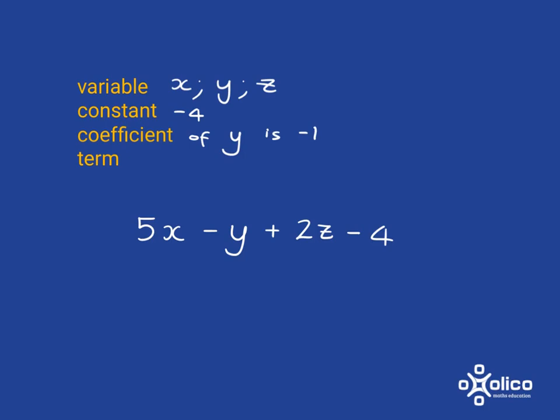And then terms in an algebraic expression are things that are separated by the addition and subtraction sign. So in this expression here, we've got 1 term, 2 terms, 3 terms, 4 terms. So in this case, we have got 4 terms.